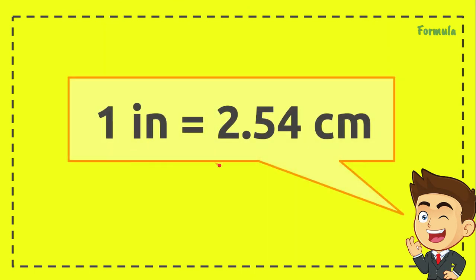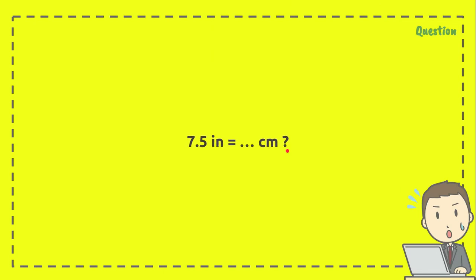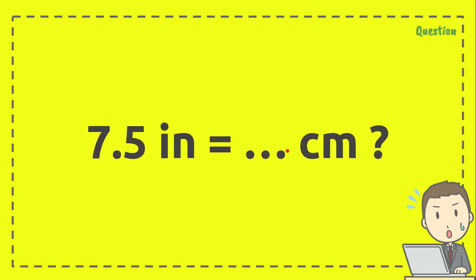In order to convert inches to centimeters, the formula is 1 inch equals 2.54 centimeters. And here's the question: 7.5 inches equals how many centimeters? That's the question.